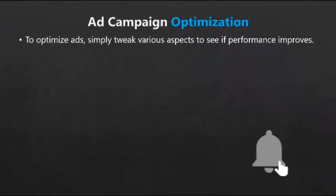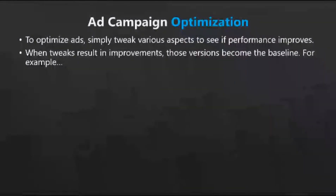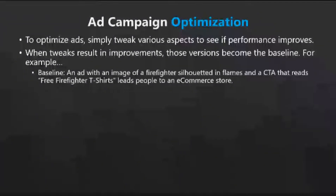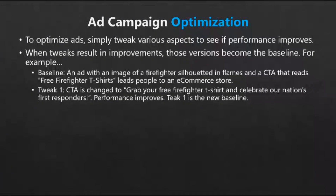Once you've taken a good look at your performance, it's time to optimize. The idea behind optimizing your Twitter ad campaign is to tweak various aspects of it, test the results of those tweaks against the baseline — for example, the original campaign — and watch what happens. If the tweak produced an improvement, keep it. That tweaked version becomes the new norm, and it's time to choose another element to tweak. For example, let's say you've got an ad campaign for firefighter-themed t-shirt sales with an image of a firefighter silhouetted in front of flames and a CTA saying 'free firefighter t-shirts.' The ad is performing worse than you had hoped, so for your first optimization attempt you change the call to action to something more descriptive: 'Grab your free firefighter t-shirt and celebrate our nation's first responders.' You notice that click-through rates increase and your cost-per-click goes down — that just became your new baseline.